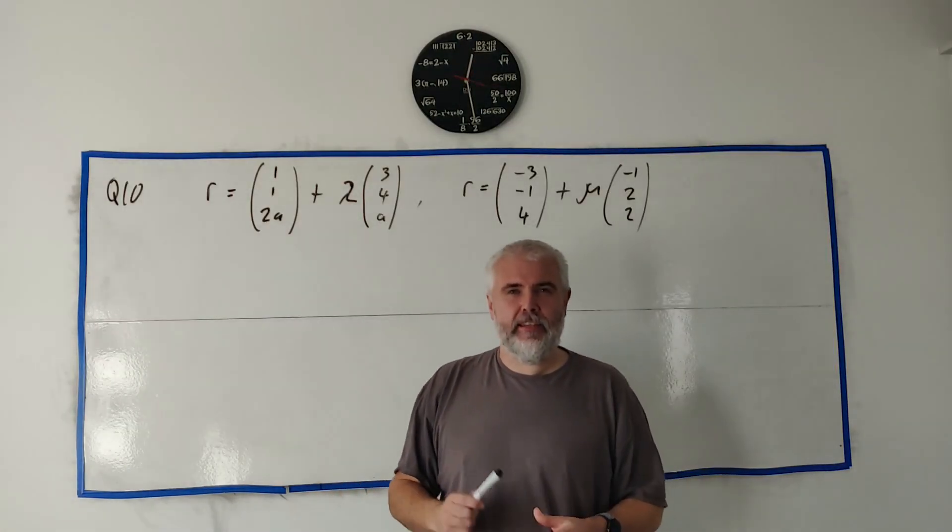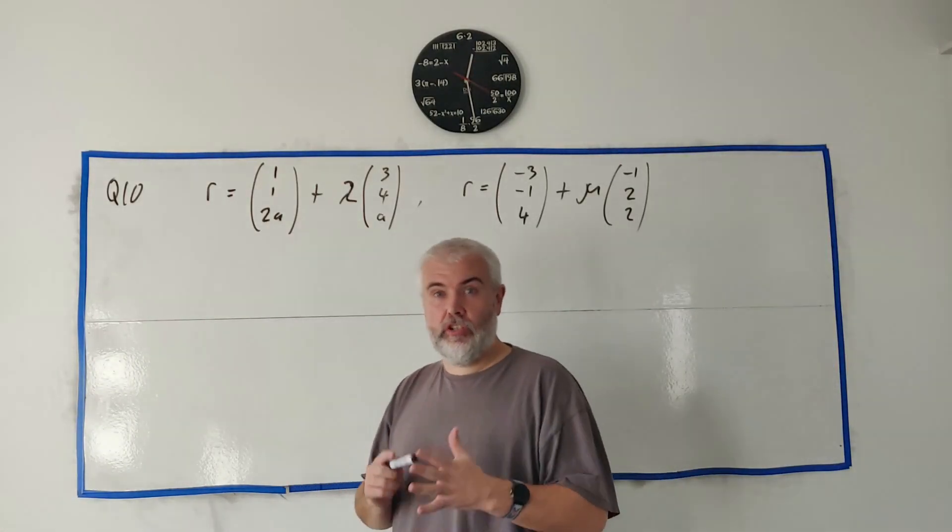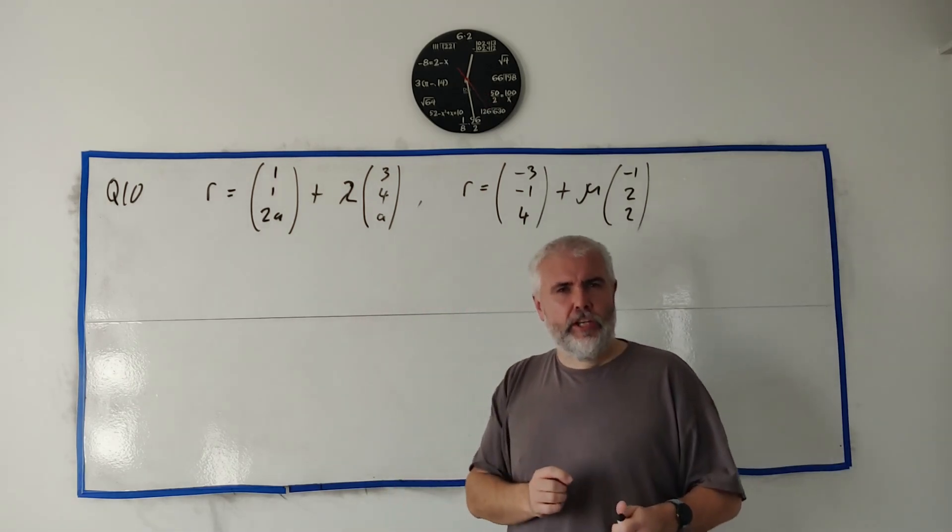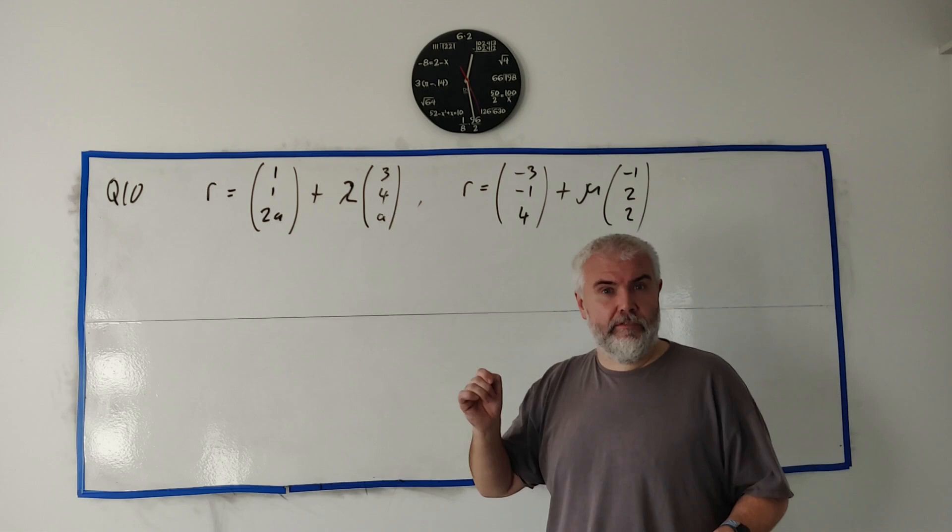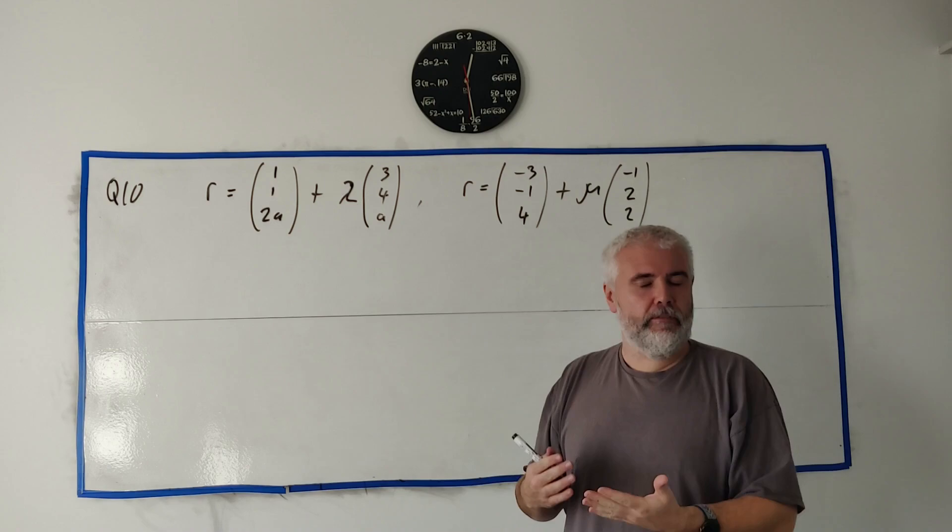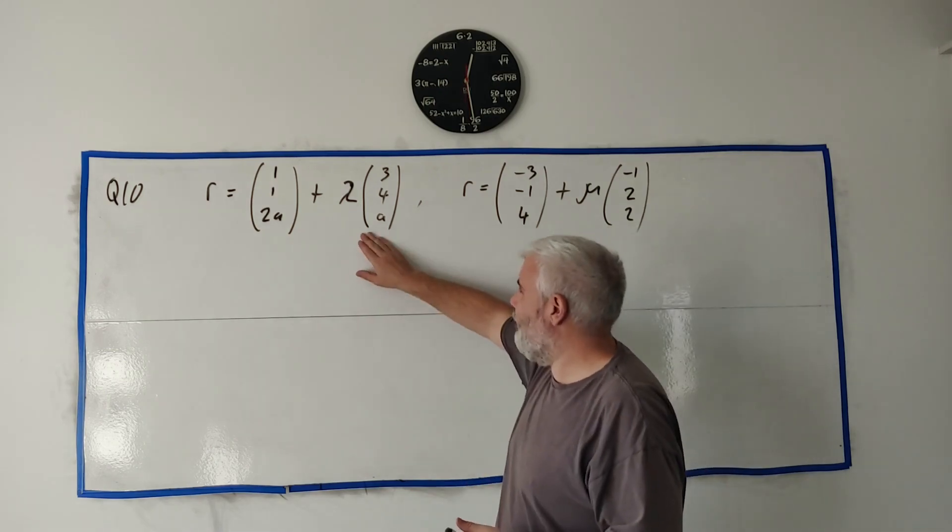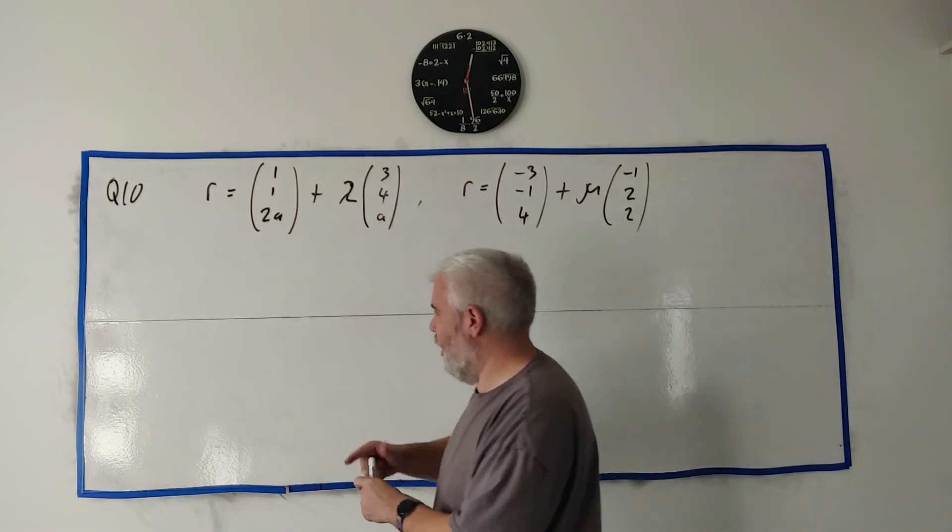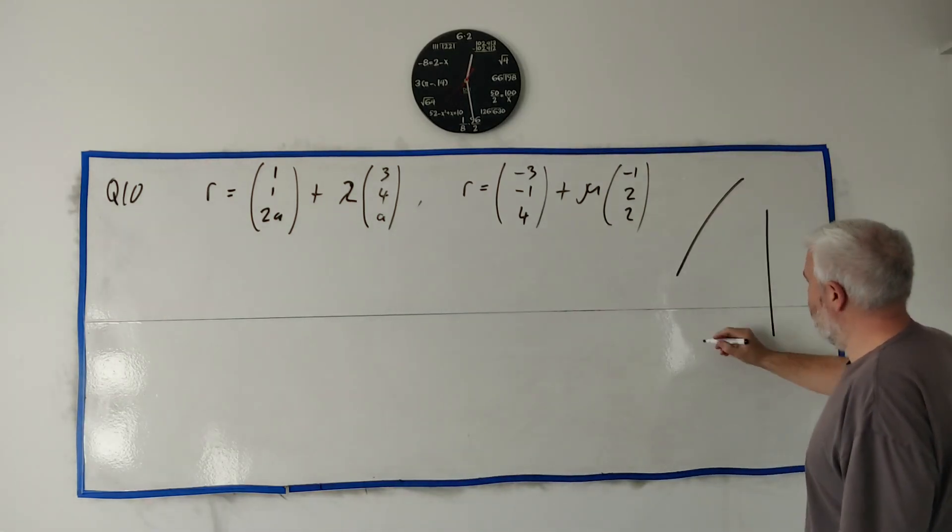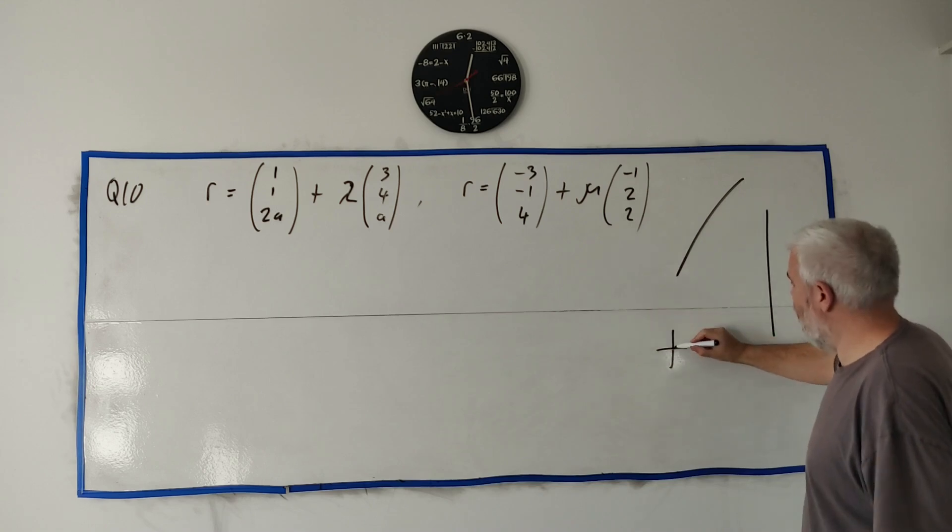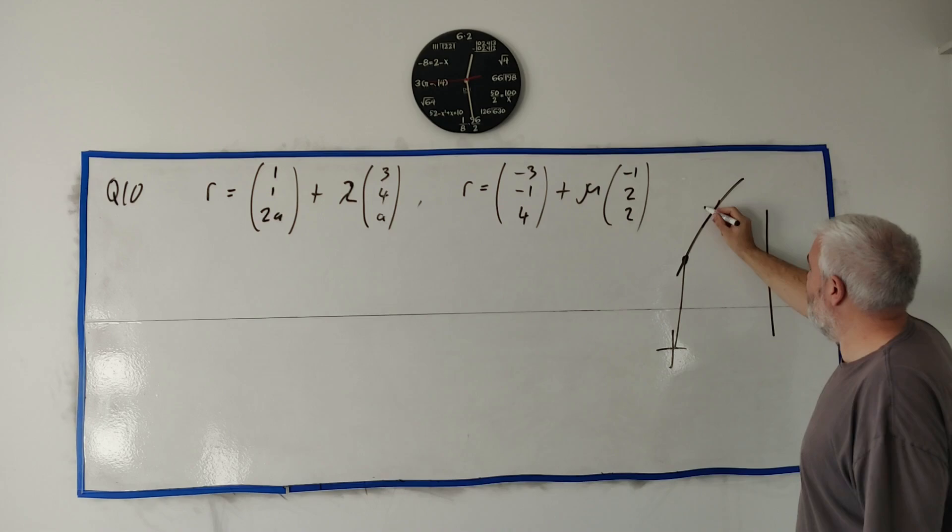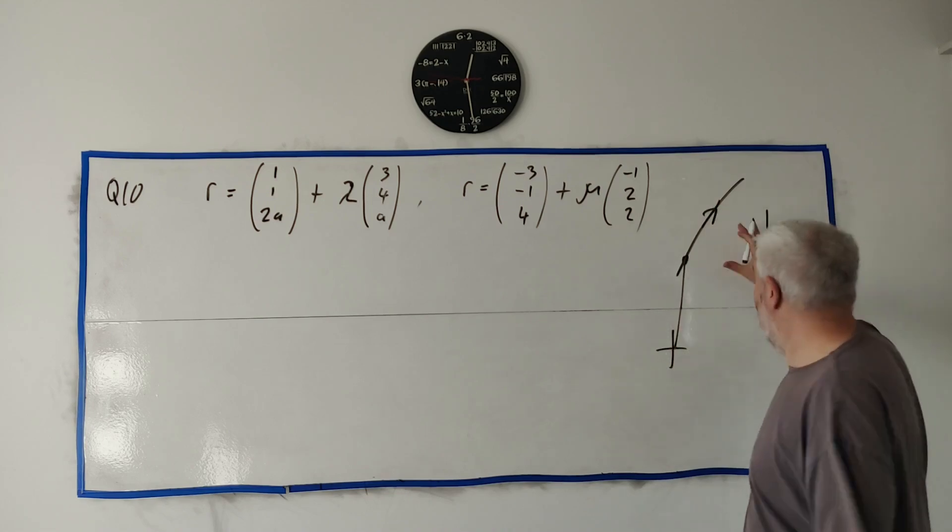In question 10 they give us the vector equation for two different lines. Just to remind you what a vector equation of a line tells you: the first vector tells you how to get to the line from the origin, and the second vector is a vector along the line. Here's one line, here's the next, and here's the origin. So the first vector gets us somewhere onto the line and the second vector is a vector somewhere on the line like that.